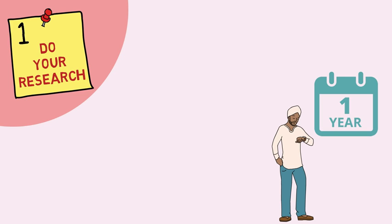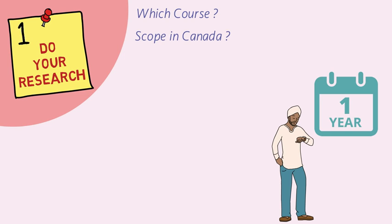The first point in your research is which course to pursue. You should be pretty sure about the course you want to study. The Canadian academic setup is quite flexible towards switching courses, although it is best to compare your options beforehand and choose a major you are truly interested in. You should also make a point of checking its scope in Canada, since most people want to settle here — think about job prospects and what kind of package you can get after completing your studies.